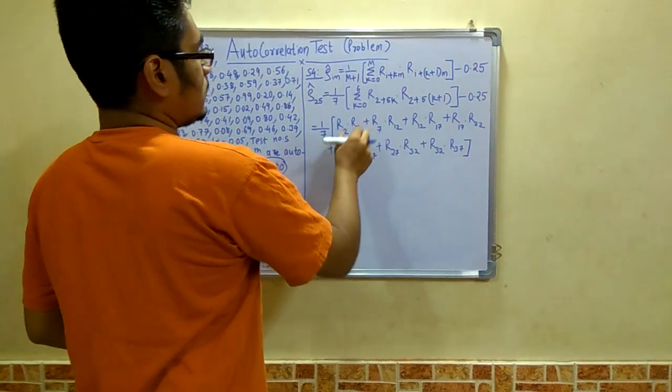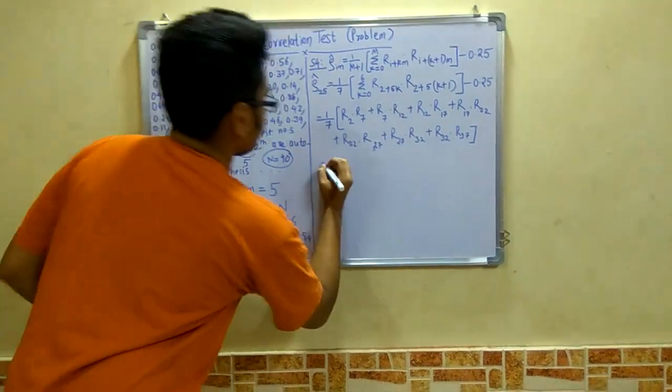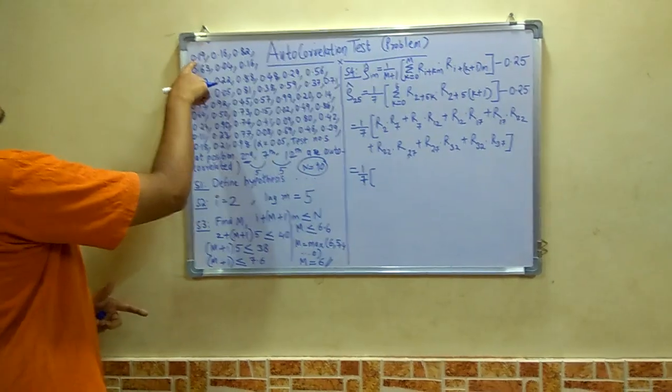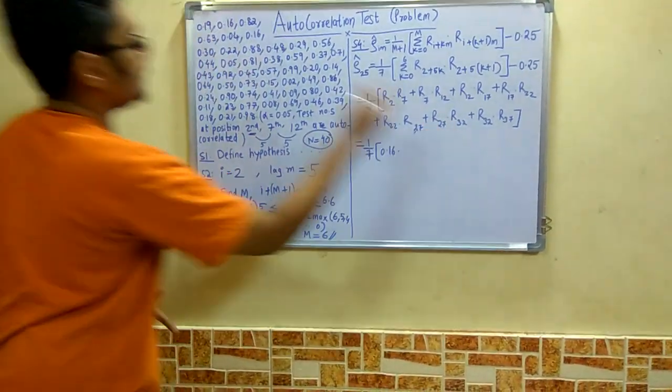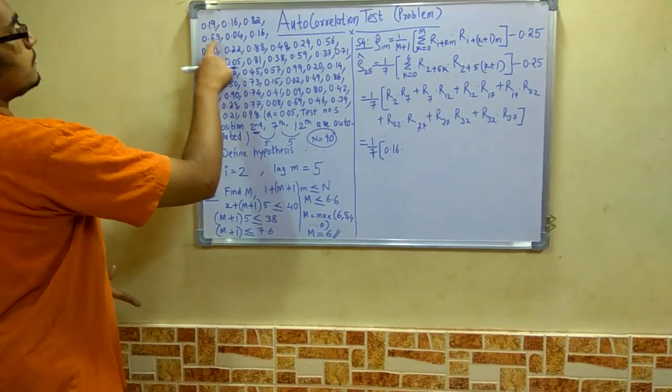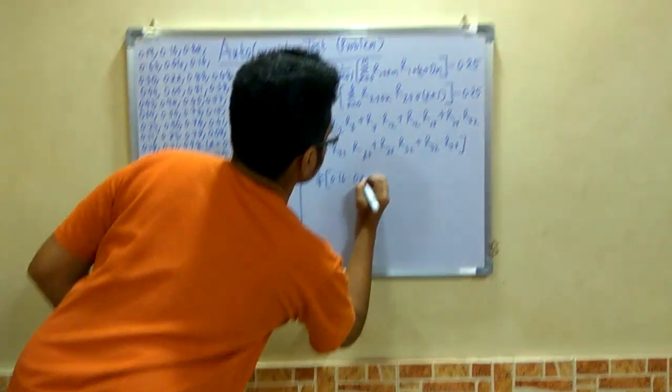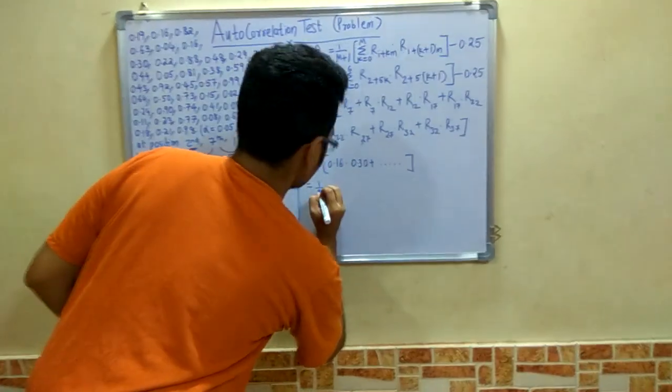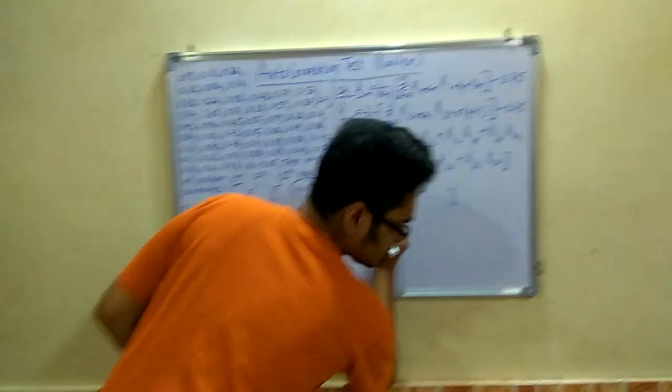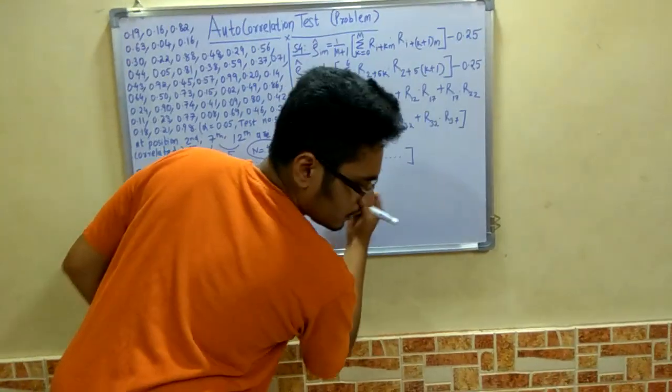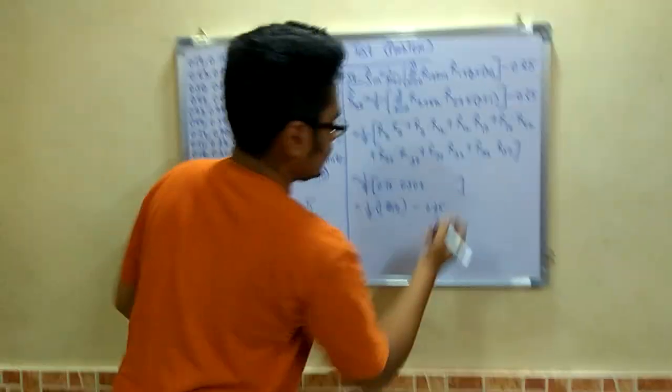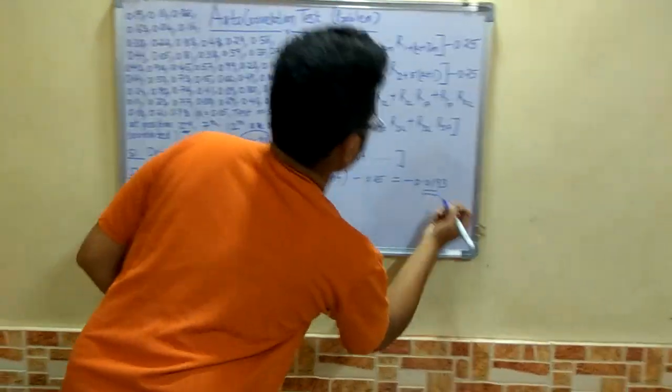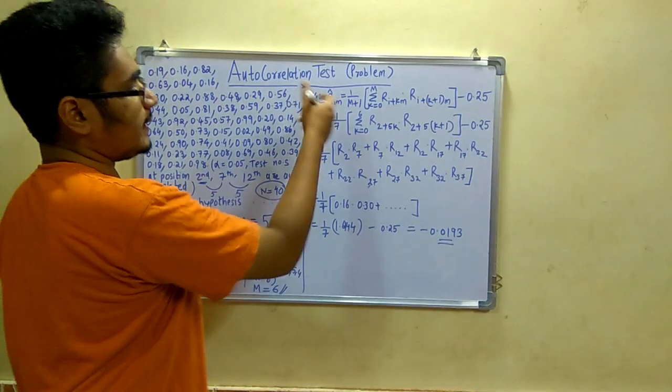Now this R2 and R7 represents the position of these numbers on this table. So you will write 1 by 7 multiplied by, now R2 is the very second number. This is R1 and this is R2. So 0.16 multiplied by R7, first, second, third, fourth, fifth, sixth, seventh. So 0.30. Likewise you have to fill this till R37. And you will get a value of 1.6144 subtracted from 0.25. And this value comes out to be minus 0.0193. Now this is the estimator that is rho cap IM.